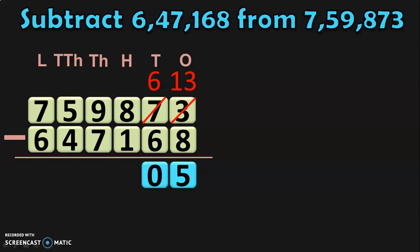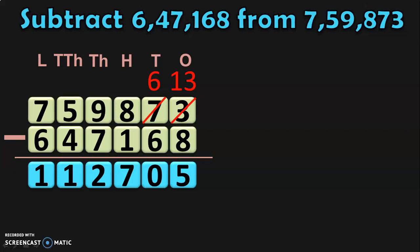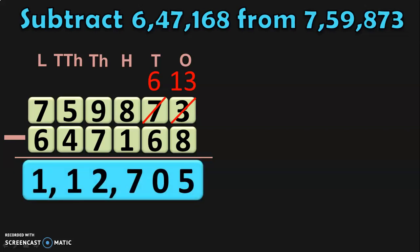Next, move on to the hundreds place where you have 8 minus 1, which is 7. In the thousands place, it is 9 minus 7, which is 2. In the ten thousands place, you have 5 minus 4, which is 1. And in the last place, you have 7 minus 6, which is 1. So, the subtraction of the two 6-digit numbers gives you the answer 1,12,705. Hope you understood how we did the regrouping of the tens place.